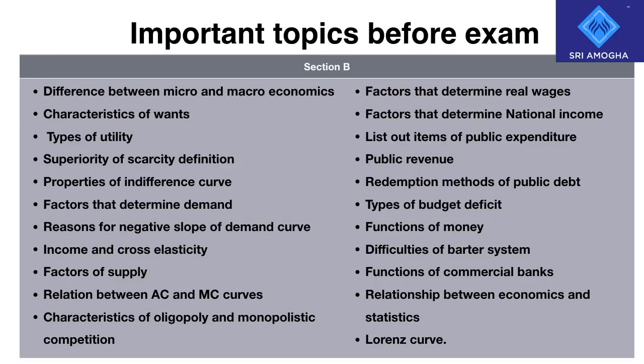Also, relation between AC and MC curves, characteristics of oligopoly and monopolistic competition, factors that determine real wages, items of public expenditure, factors that determine national income, public revenue, redemption methods of public debt, types of budget deficit, functions of money, difficulties of barter system, functions of commercial banks, relationship between economics and statistics, and Lorenz curve.